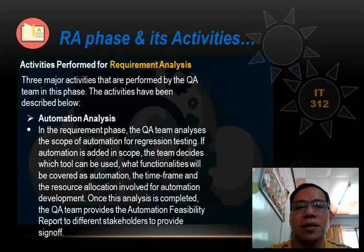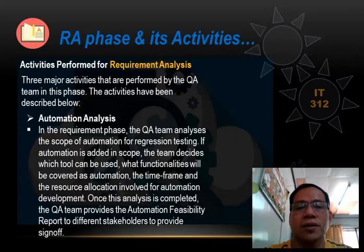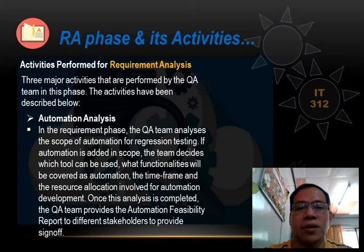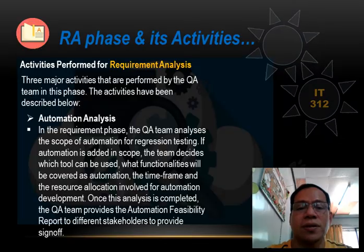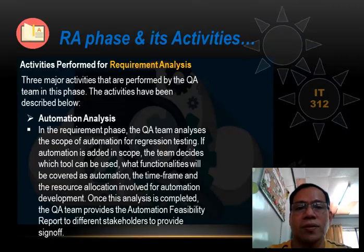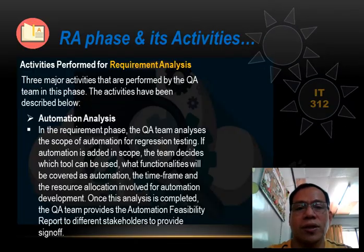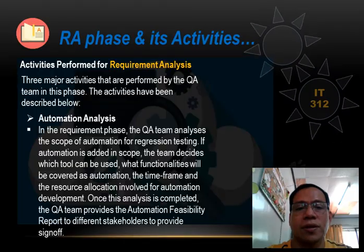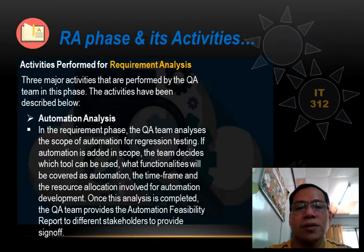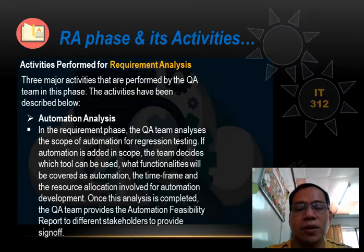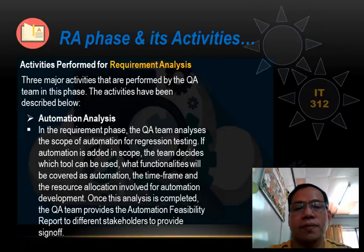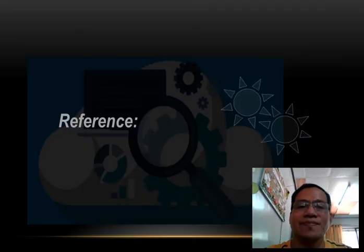Another requirement analysis activity is automation analysis. In the requirement phase, the QA team analyzes the scope of automation for regression testing. If automation is added in scope, the team decides which tool can be used, what functionalities will be covered as automation, the time frame, and the resource allocation involved for automation development. Once this analysis is completed, the QA team provides the automation visibility report to different stakeholders.